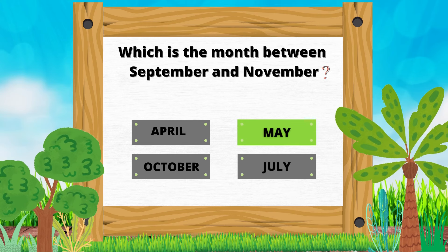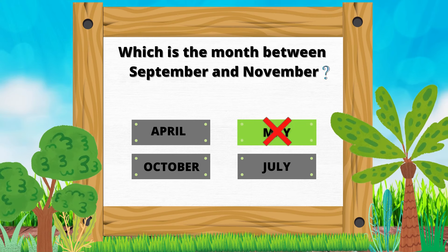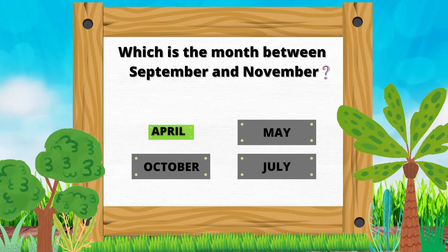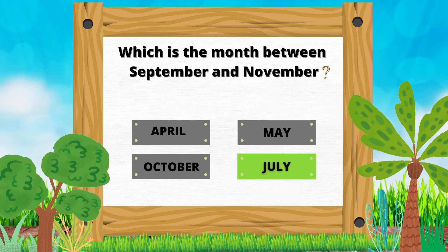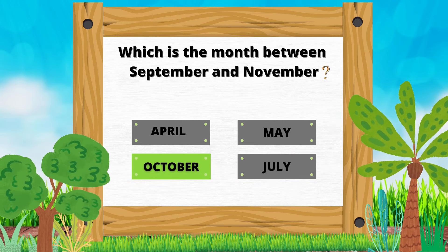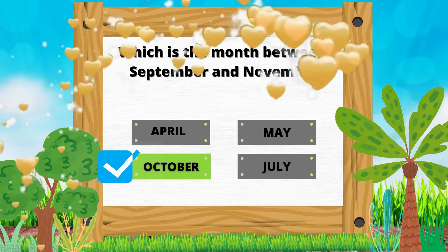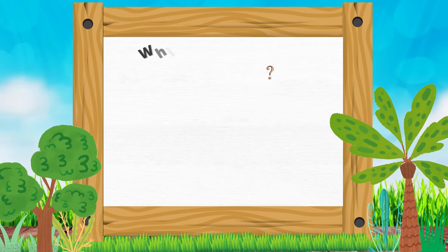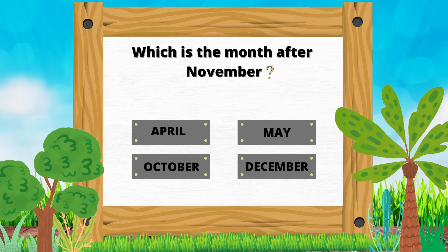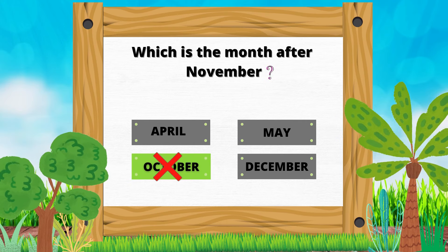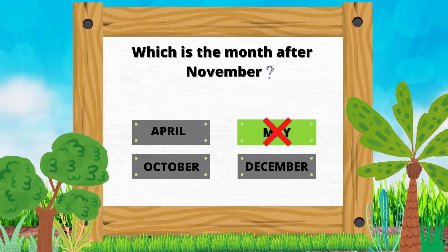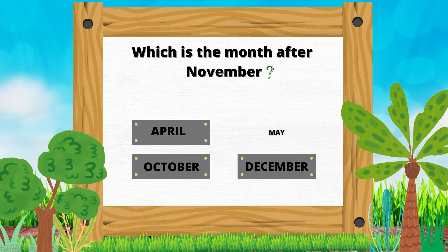October. September. May. July. July. October. Which is the month after November? October. May. December.